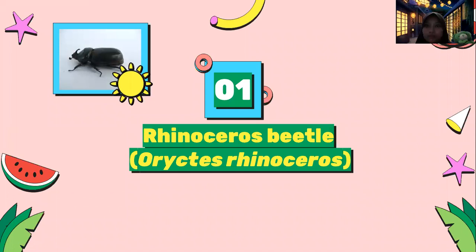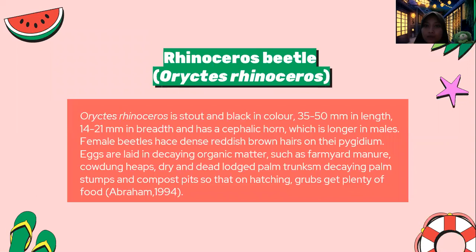The first pest of coconut is the rhinoceros beetle, or Oryctes rhinoceros. It is stout and black in color, 35-50 mm in length and 14-21 mm in breadth, and has a cephalic horn which is longer in males. Female beetles have dense reddish-brown hairs on the pygidium. Eggs are laid in decaying organic matter such as farmyard manure, cow dung heaps, dry and dead palm trunks, decaying palm stumps, and compost pits, so that on hatching the grubs get plenty of food.